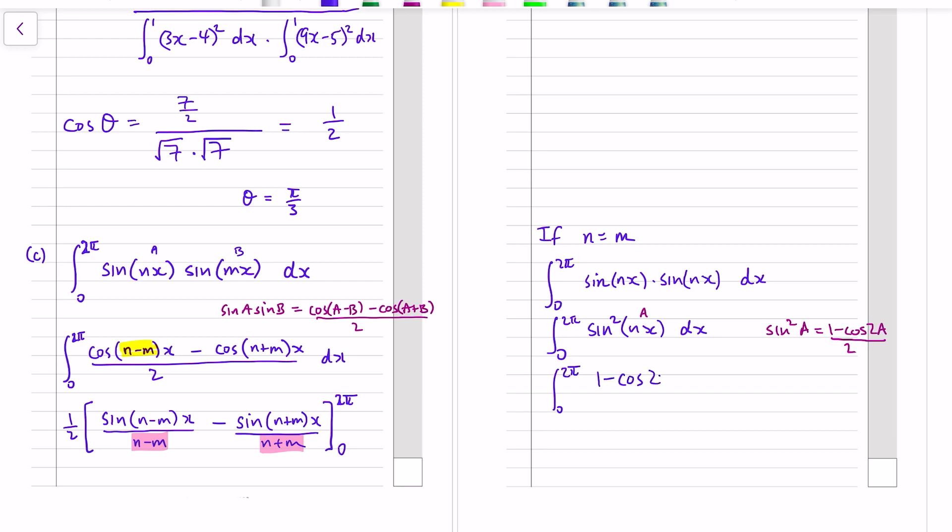So the only special case we need to consider is if n and m are the same, and that would be integrating 0 to 2 pi sine of nx times itself. Okay, and to integrate that we do it in a slightly different way. We use the double angle formula because what we're integrating is sine squared of nx. And there's a double angle formula still on the trig formula sheet down the bottom left. There's a formula that relates powers of sine, we've used it in quite a lot of other videos to date. It's 2 sine squared a is equal to 1 minus cos 2a.